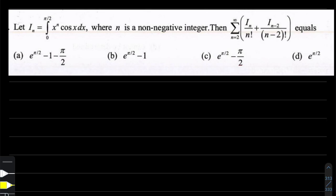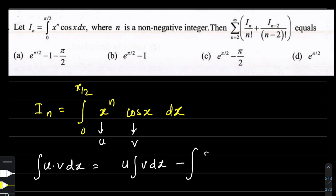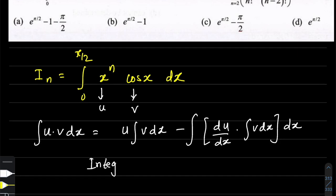The first approach that comes to mind is integration by parts. We have two functions: x to the power n, which is an algebraic function, and cos(x), which is a trigonometric function. We'll call x^n as u and cos(x) as v. The IBP formula states that the integral of u·v dx equals u times the integral of v, minus the integral of the derivative of u times the integral of v.